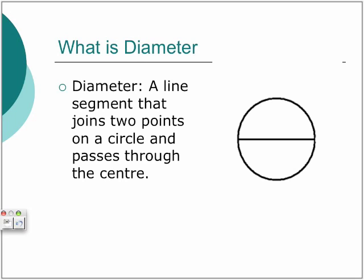A line segment that joins two points on a circle and passes through the center — so this line over here is the diameter.